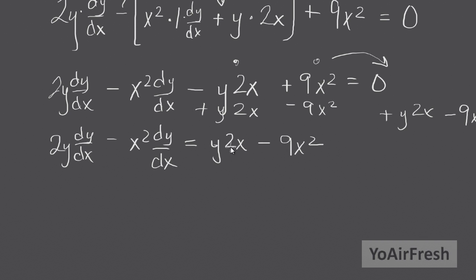All right. So now we have the dy/dx terms on one side, which is perfect. So we're just going to factor out the dy/dx. dy/dx. And then in parentheses, the 2y minus the x squared. Equals. I'm going to change this up to the 2xy because it just looks better. Minus 9x squared.